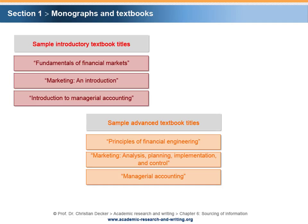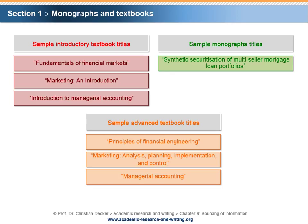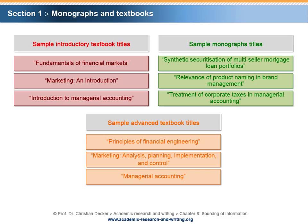In contrast, monograph titles signal more depth and sophistication. This is exemplified with titles such as Synthetic Securitization of Multi-Seller Mortgage Loan Portfolios, Relevance of Product Naming and Brand Management, and Treatment of Corporate Taxes and Managerial Accounting. These titles indicate a detailed, specific and in-depth work on one subject area. In addition to evaluating the title, one should skim the content of the publication in order to clarify its level of sophistication.